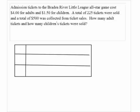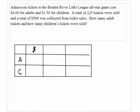Here we have two different types of tickets — one for adults and one for children, so we put A and C here. We put the dollar sign for how much it's worth, and here we put the number of tickets. It costs $4 for the adult ticket, so we put $4 here.